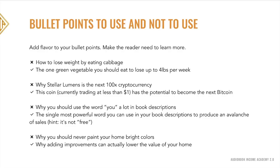Another example — bad: 'Why you should use the word you in book descriptions.' Better: 'The single most powerful word you can use in your book descriptions to produce an avalanche of sales — hint: it's not free.' The phrase 'avalanche of sales' is descriptive and vivid. One more example from homeware: bad — 'Why you should never paint your home bright colors.' Better: 'Why adding improvements can actually lower the value of your house' — that seeming contradiction makes someone need to buy the book to figure out what you're talking about.